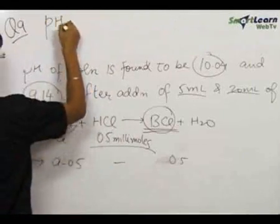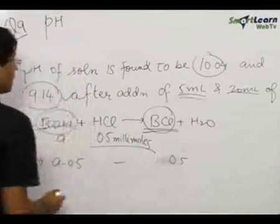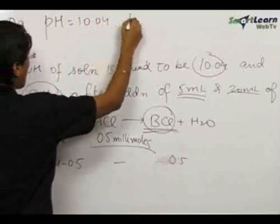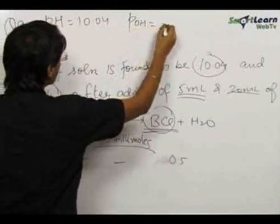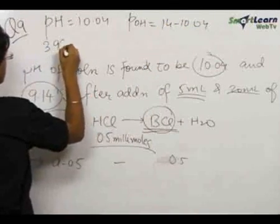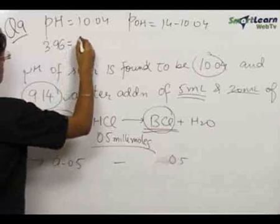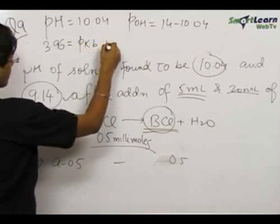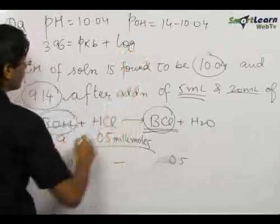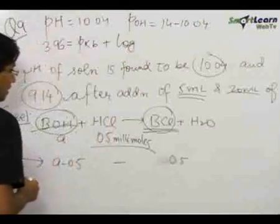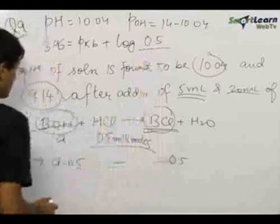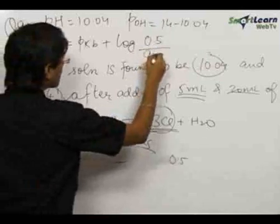Therefore, the pH at this moment is given to be equal to 10.04. Hence, its POH will be equal to 14 minus 10.04 which is equal to 3.96. This is equal to PKB plus log of salt upon base, here the salt is BCL that is 0.5 upon the base that is A minus 0.5.